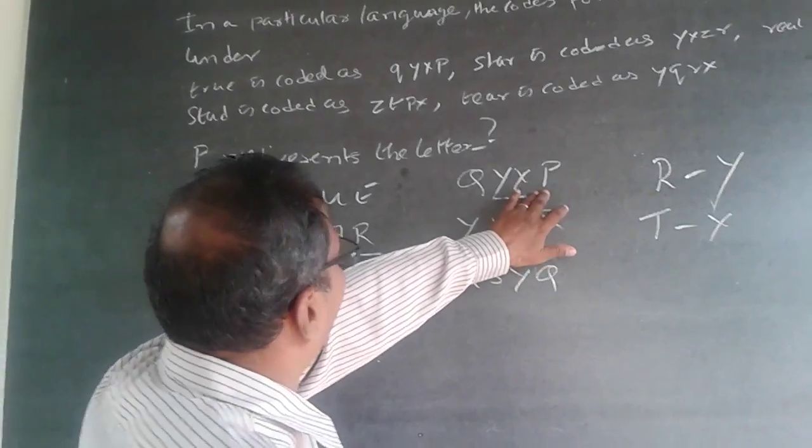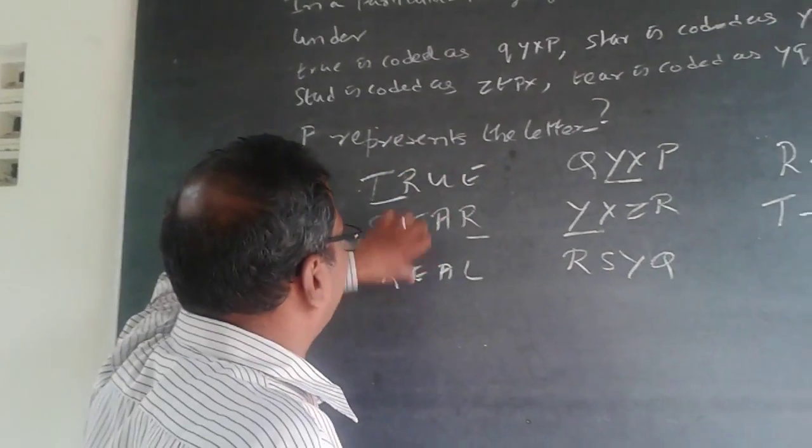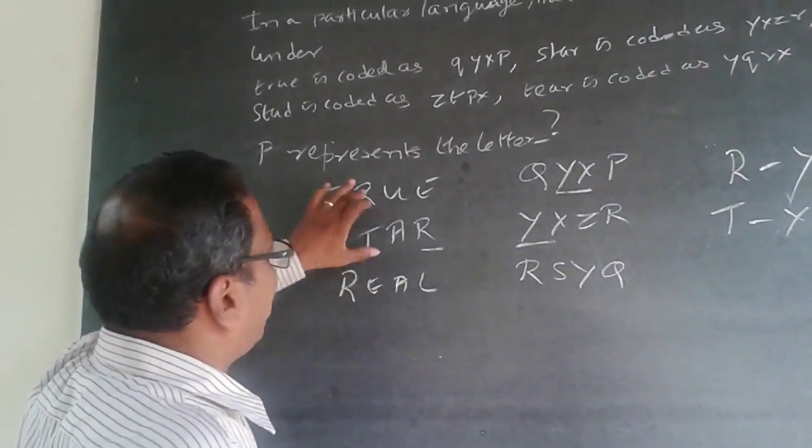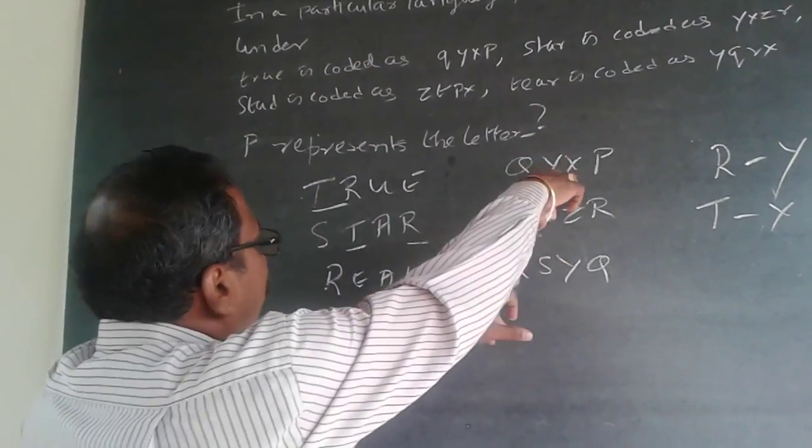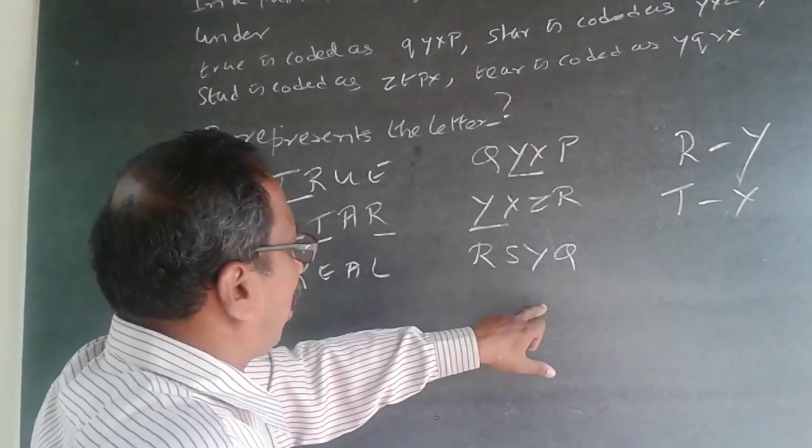Now what happens is we have P here. This is only word with P, and here I have E as common. To find out, other than Y, what is the common letter?